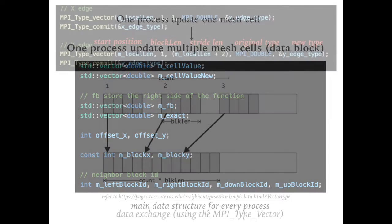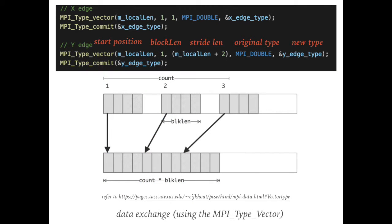Another important issue is how to exchange data efficiently. The ghost area may not be continuous in memory space. If the data is stored in the row major, the ghost area in X direction is continuous, and the ghost area in the Y direction is discontinuous.